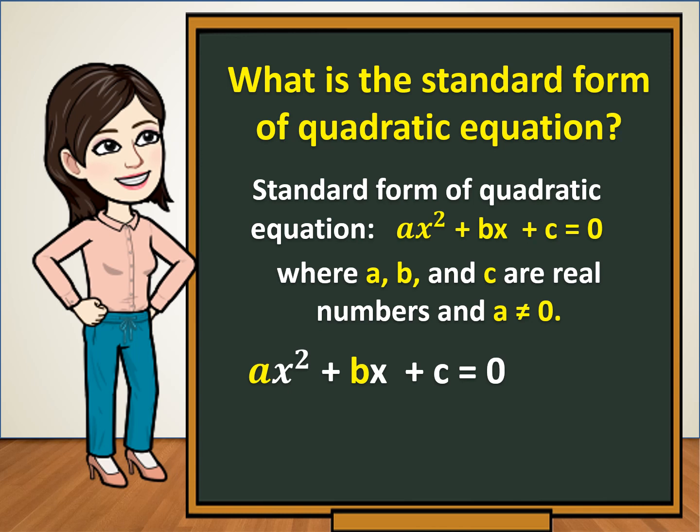AX squared plus BX plus C is equal to 0. A and B are coefficients, C is constant.